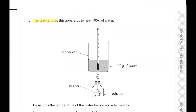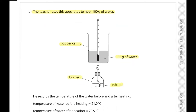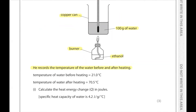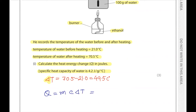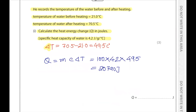Part D. The teacher uses apparatus to heat 100 g of water using a burner with ethanol. Temperature before heating: 21°C; temperature after heating: 70.5°C. Calculate the heat energy change Q in joules. Specific heat capacity of water = 4.2 J/g/°C. ΔT = 70.5 − 21.0 = 49.5°C. Q = mcΔT = 100 × 4.2 × 49.5 = 20,790 J.